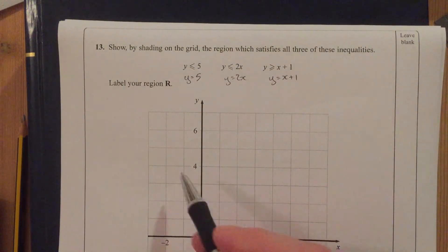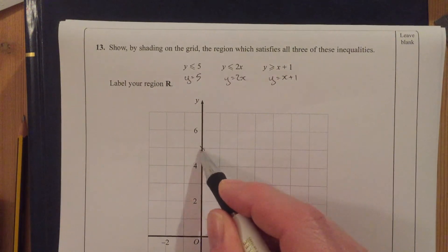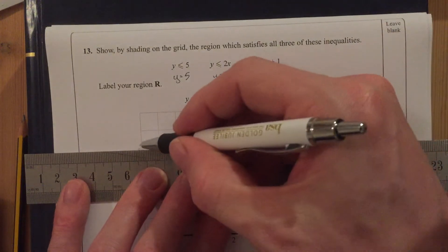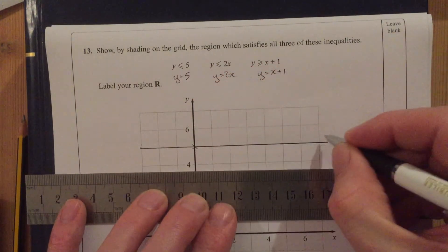And y equals 5. Well, y equals 5. So that's y equals 5 all the way across here, because every point on that line, y equals 5.